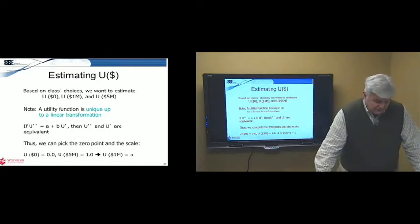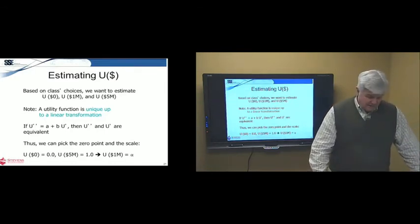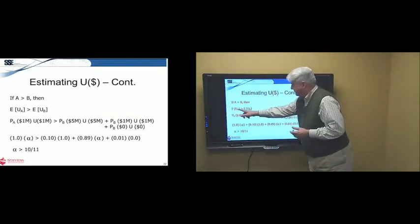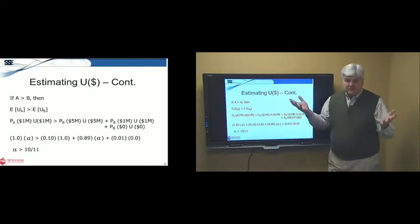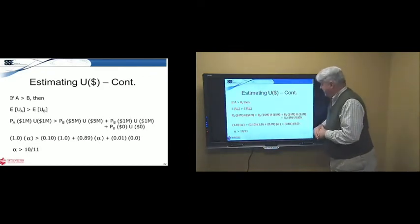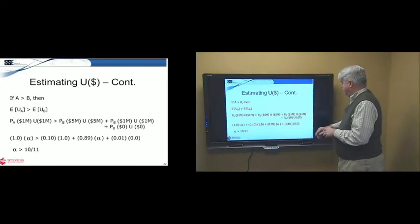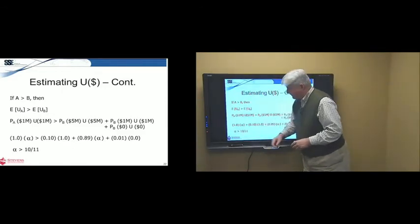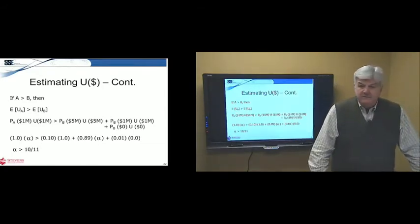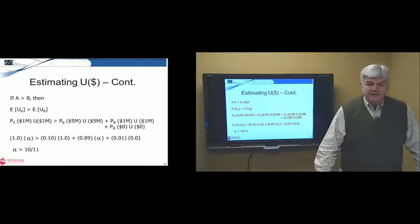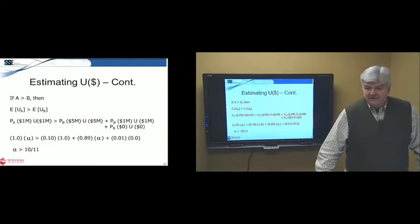Anyways, we can pick the zero point in the scale. So, we're going to make the utility of zero, zero, and the utility of five million, one. And now, the question is, what is the utility of one million? Well, if you actually prefer A to B, then the expected utility of A must be greater than the expected utility of B. That's why you picked it. So, we use our expected value functions. The probability of one million times the utility of one million is greater than the probability of five times the utility of five, plus the probability of one, utility of one, probability of zero. And we just work out the algebra here and plug in the numbers. And this basically says alpha is going to be greater than ten-elevenths. Remember, we said the utility of one million is alpha, some unknown. So, at this point, we know if you preferred A to B, then the utility of one million dollars is greater than ten-elevenths. Pretty close to the five million.